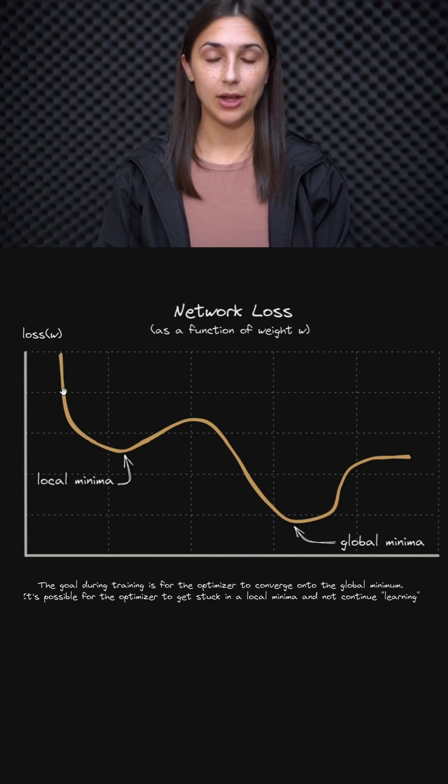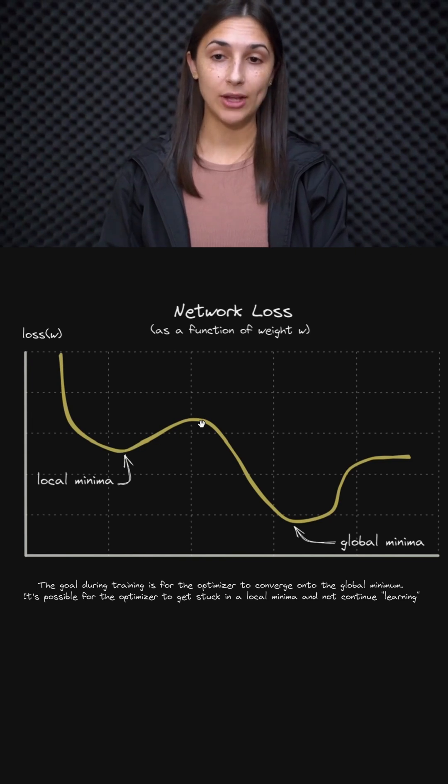If our network is attempting to reach a minimum loss and comes to this point here, then it's possible that it ends up getting stuck and is unable to learn anymore and never ends up reaching over this local maxima here before coming down to the global minimum.